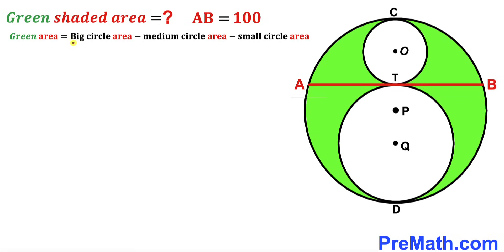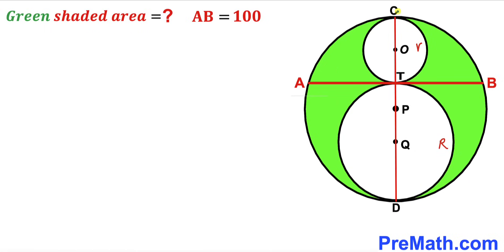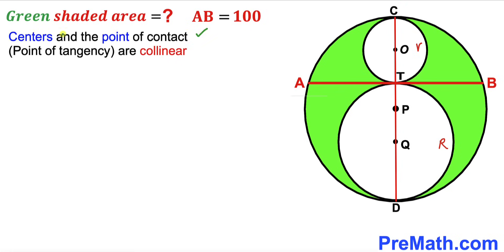Our task is to calculate the area of the big circle, the medium circle, and the small circle. Let's assume the radius of the medium circle is uppercase R and the radius of the small circle is lowercase r. I have connected points C and D, and we recall that the centers and the point of tangency are collinear — so all points of tangency and centers lie on the same line.